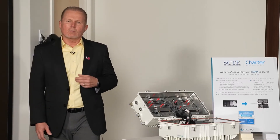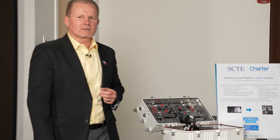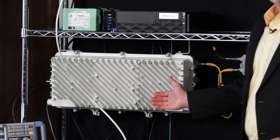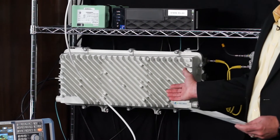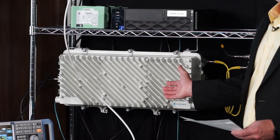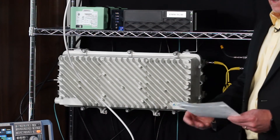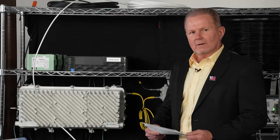We've emulated everything all the way to the end of the line, and now I'm going to walk you through the different devices. The second demo is the DOCSIS 4.0 FDD demonstration. Partnering with several vendors, we've been able to put together a replication of what would be a Node Plus 4 Cascade in the HFC network. First, we'll talk about the Vesema node. The Vesema node is supporting a DOCSIS 4.0 remote MAC PHY device. It supports 1.8 GHz on the RF.